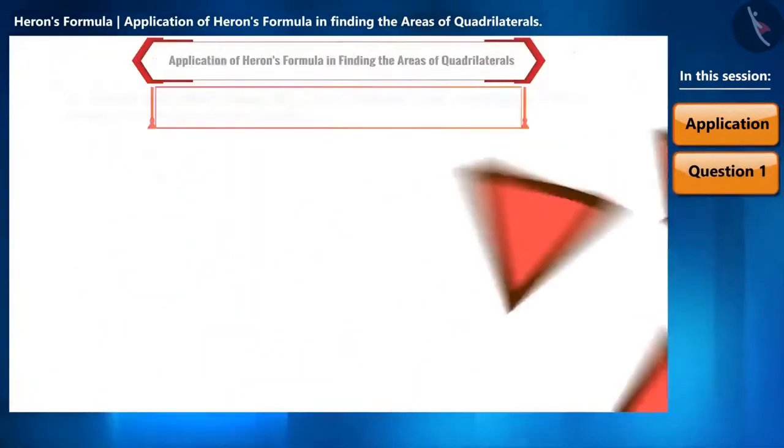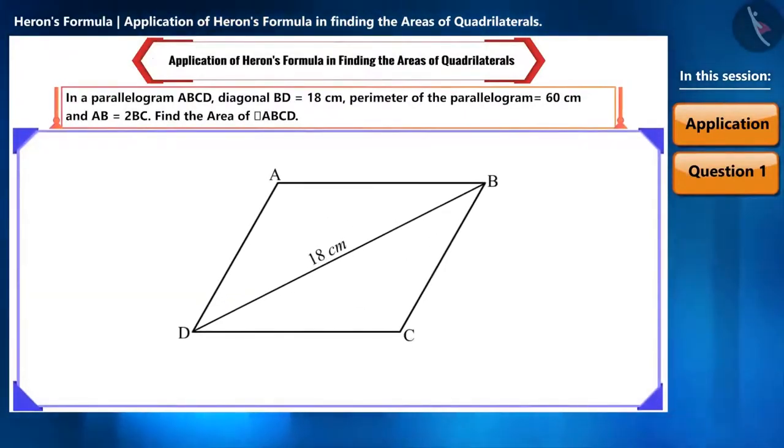Now, let's take one question. Friends, in a parallelogram ABCD, diagonal BD equals 18 cm, and the perimeter of ABCD is given to be 60 cm. It's also given that AB is 2 times BC. And we have to find the area of parallelogram ABCD.